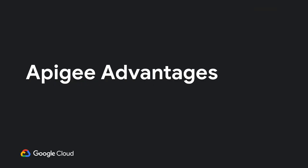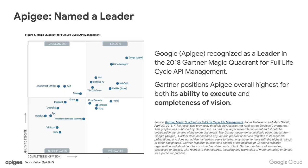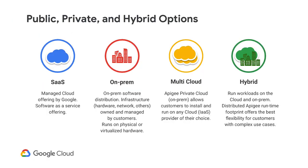Let's talk about some advantages Apigee has over other solutions. In Gartner's recent Magic Quadrant survey, they found Apigee to be a leader, ranked highest in ability to execute and completeness of vision. Apigee is offered as a SaaS managed in Google Cloud, you can run it on-premises in a data center, in the cloud of your choice, or hybrid — where most runs in the cloud and some runs near your computing resources.